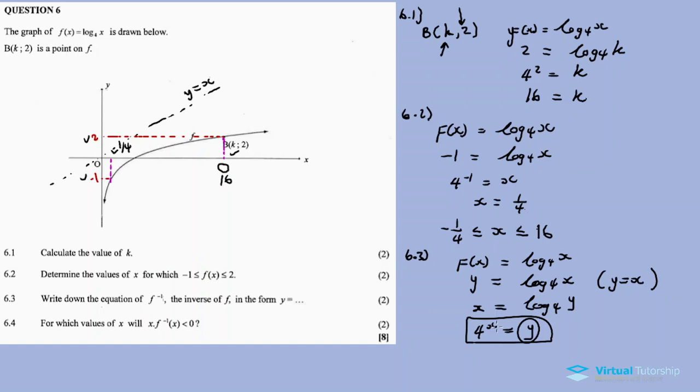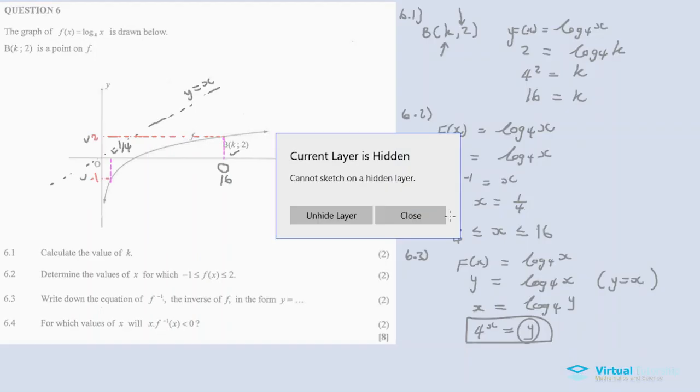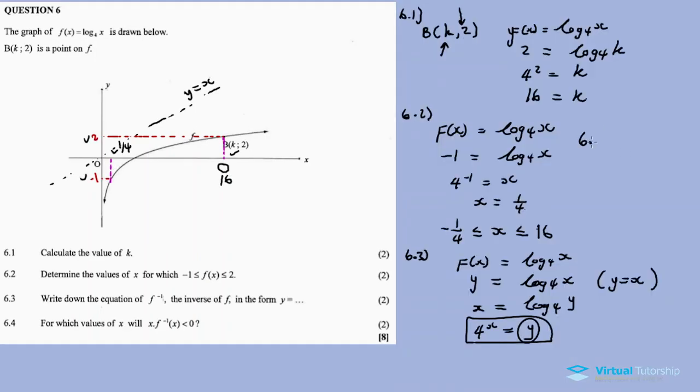Boom, straight deal. 6.4: For which values of x will x times the inverse of f be less than 0? Okay now for 6.4.